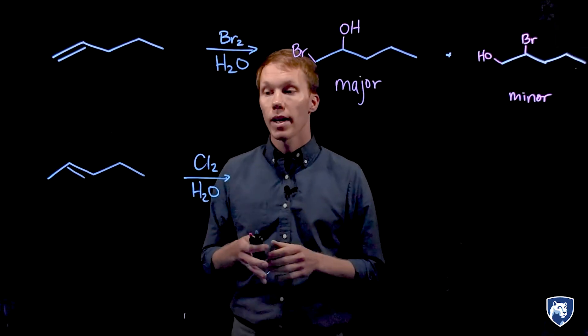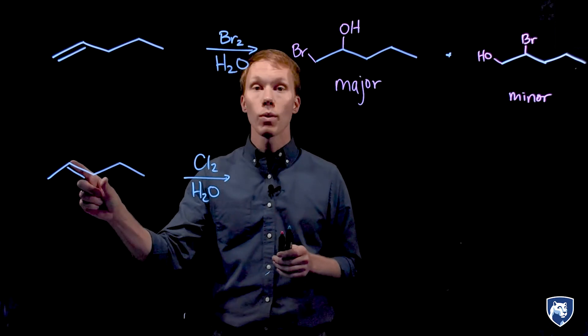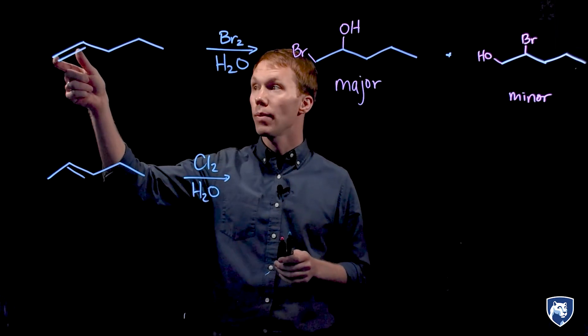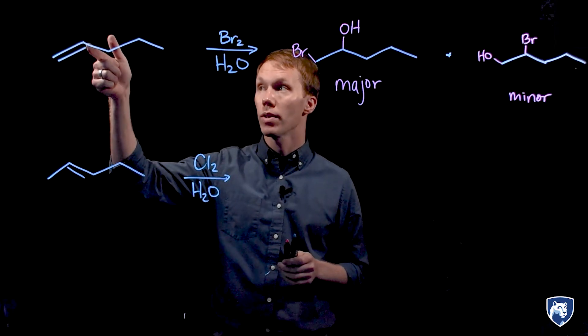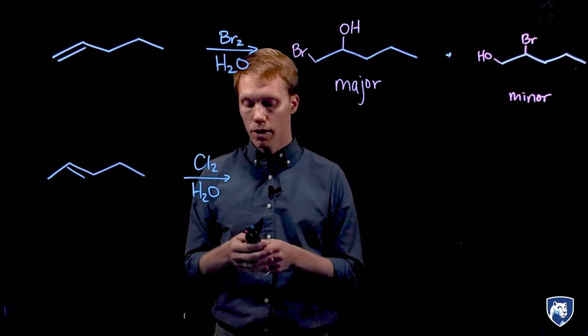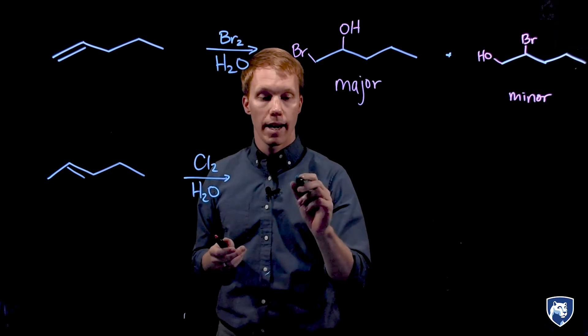Let's take a look at another example where this alkene now is equally substituted. In our first example we had a monosubstituted alkene where there was a less substituted end and a more substituted end. Here we have equal substitution at both ends of my alkene.